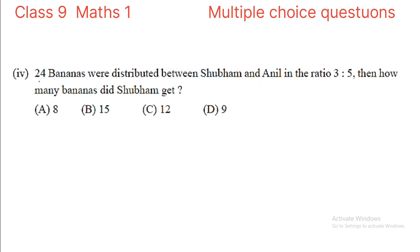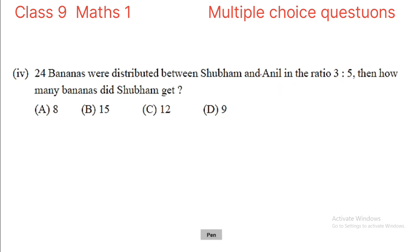Next question: 24 bananas were distributed between Shubham and Anil in the ratio 3 is to 5. How many bananas did Shubham get? The options are 8, 15, 12, or 9. The ratio is 3 is to 5.